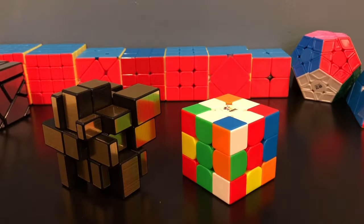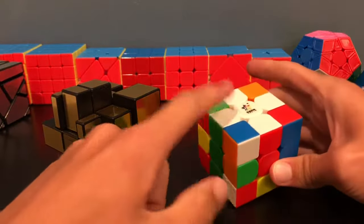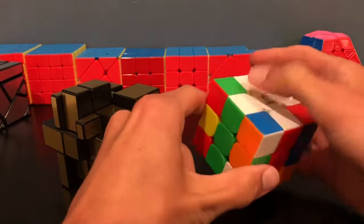Now our first step, of course, is going to be to get the white cross. Now this is easy on a 3x3 because we can see the colors really easily and just pair up our four pieces.